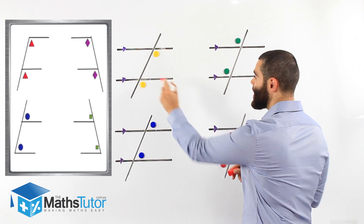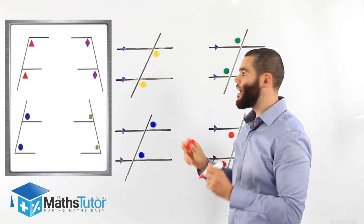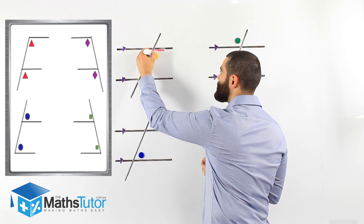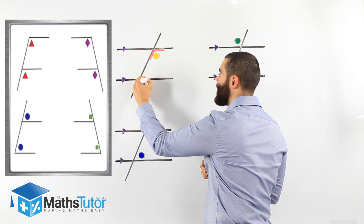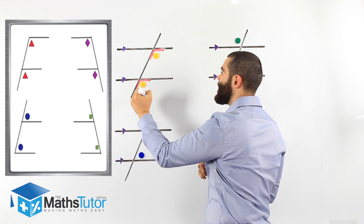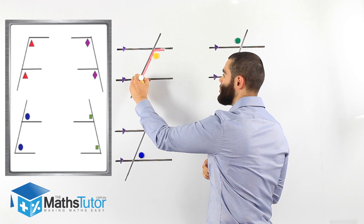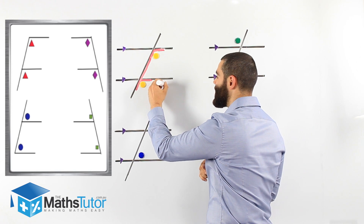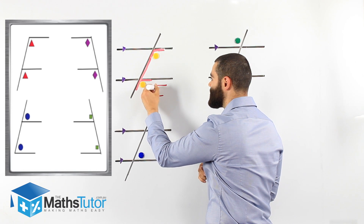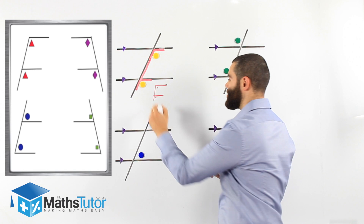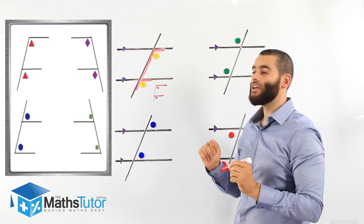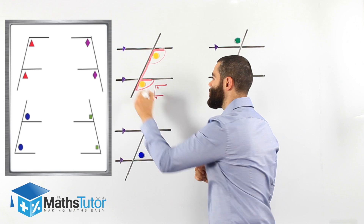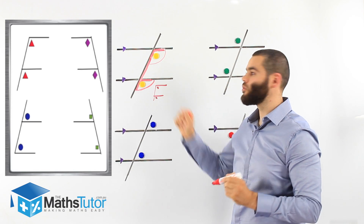Here we have a pair of corresponding angles. How do we know they are corresponding? We look for an F-shape. We highlight this angle, we highlight that angle, and we connect them together. Once we do that, we can see we have an F-looking shape where our angle is here and there as well. An angle there and an angle there makes an F-looking shape, so these are corresponding to one another.